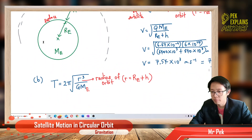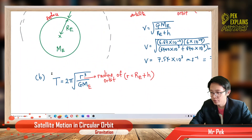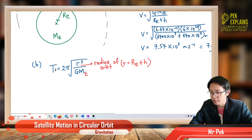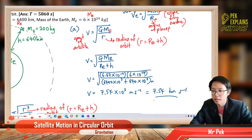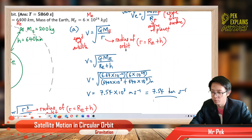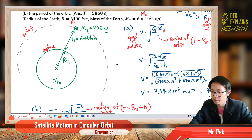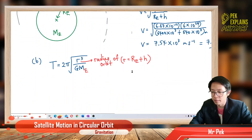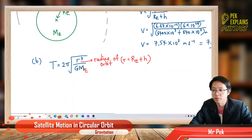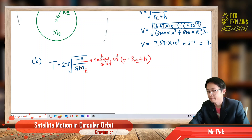So the period of the orbit — the formula is T equals 2π times the square root of r cubed over gM. Again, this r is the same as before: radius of orbit, which is radius of earth plus the altitude. And this also uses the mass of the planet — mass of earth.